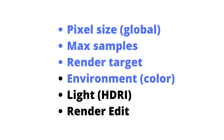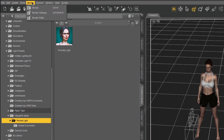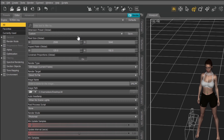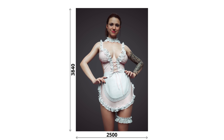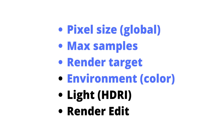So let's see the first thing: the pixel size. I talk about pixel size so many times. The pixel size is the global pixel size of your render. As you can see here in this render, we have 3840 and here 2500 — it looks like a big pixel size, but this is one of the keys to get a good result: to render with a big pixel size.